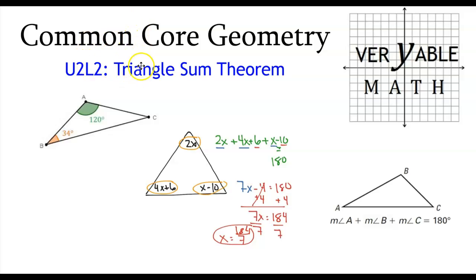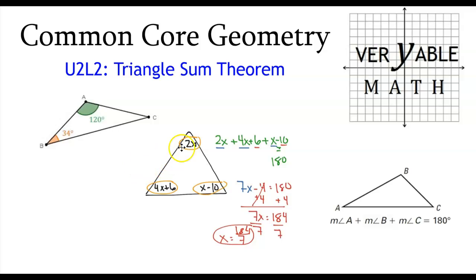Hello students. This video is about the triangle sum theorem. It's the second lesson in unit two. We're going to be talking about the relationship between the interior angles of a triangle, which turns out to be the same for every type of triangle, regardless of whether it's equilateral, acute, isosceles, or whatever the case may be.